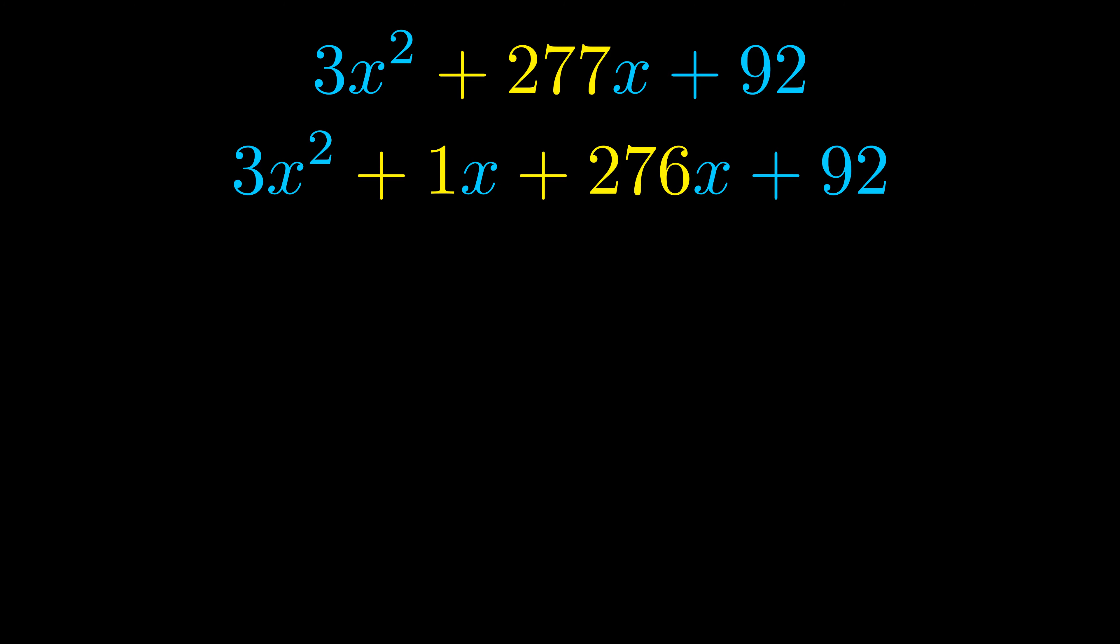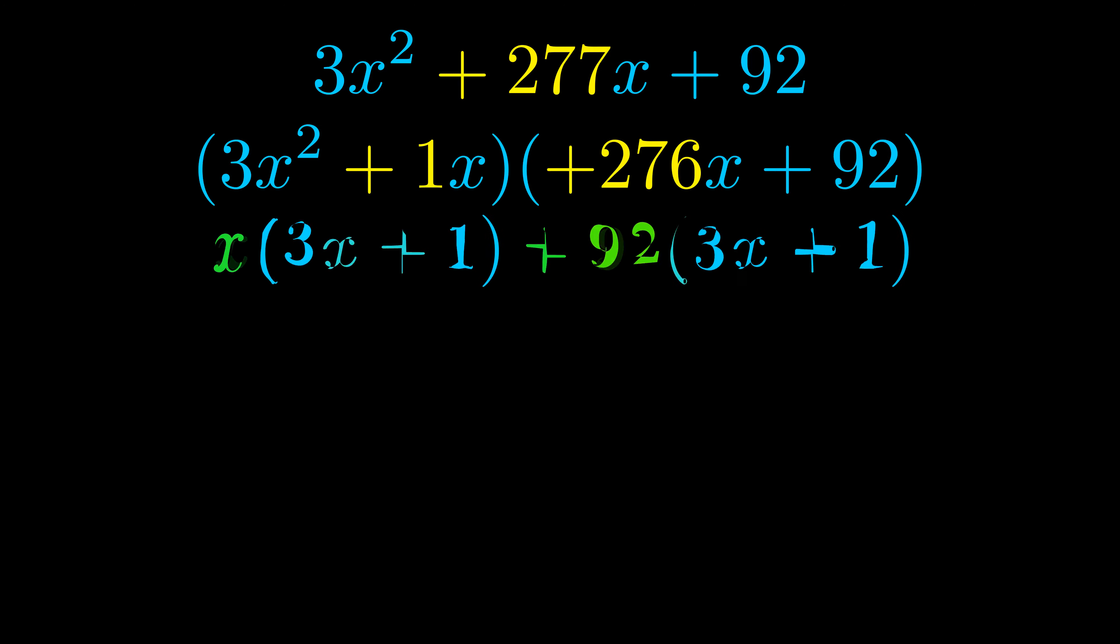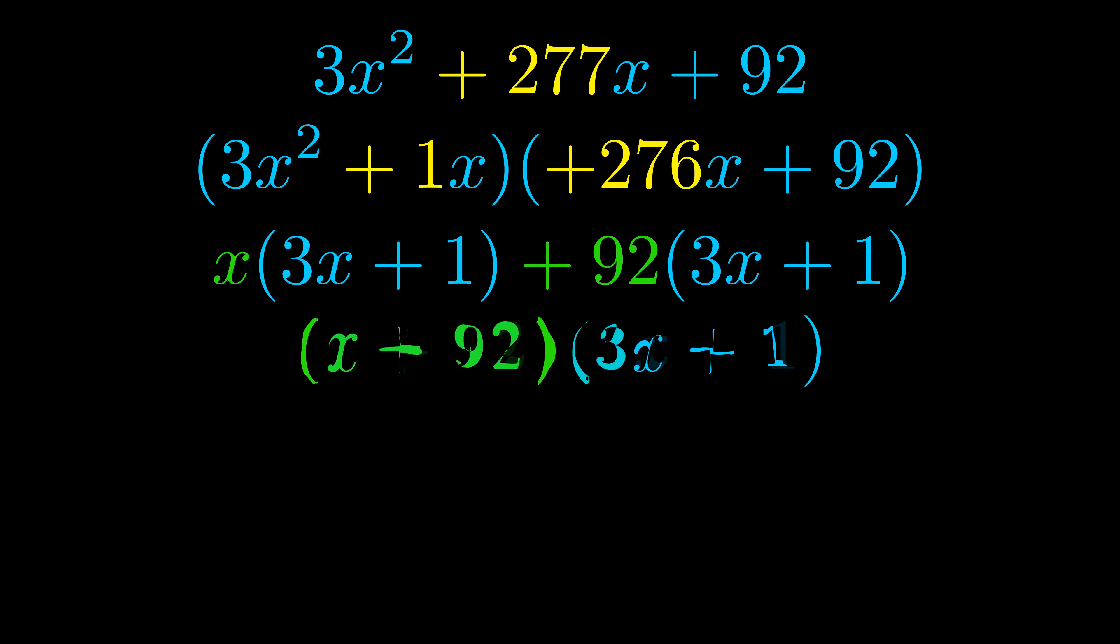Once we've done this we go ahead and we put parentheses around the first term and the last term. And we do that so that we can take the greatest common factor out of both terms. We can see the greatest common factor is now outside in green. Notice also how what remains inside of the parentheses is the same in both cases. The blue values are the same.